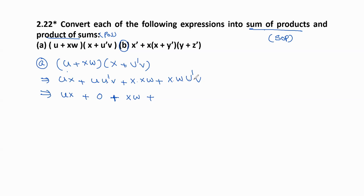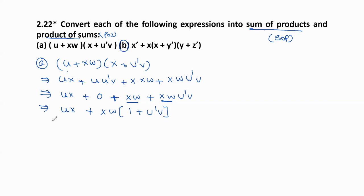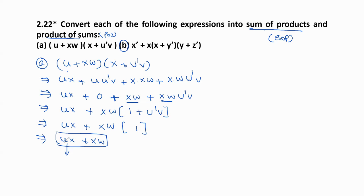We should simplify the expression. x·w is common in two terms, so we factor it out: u·x as it is, plus zero which we neglect, plus x·w times the bracket (1 plus u'v). Since 1 plus u'v equals 1, the final SOP form is u·x plus x·w. This is the first product term and the second product term.